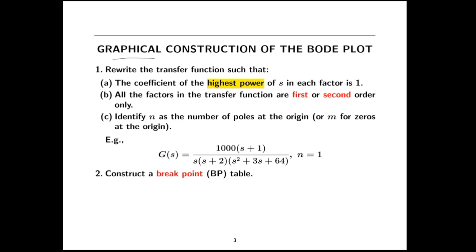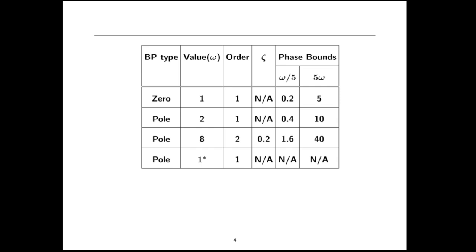But what we're going to do is the graphical construction technique. There are just a few steps associated with it. First, you want to write your transfer function in what's called Evans form — where the coefficient of the highest power of S in each of the factors is equal to 1. You also want to make sure that you've formed your transfer function so that you have only first and second order factors. Then you want to identify the number of either poles or zeros at the origin — in this example we have one pole at the origin.